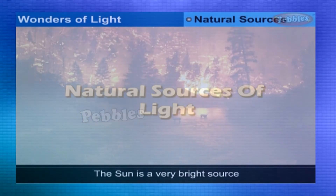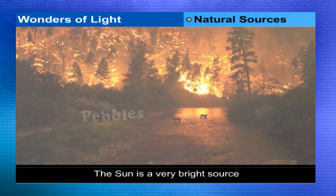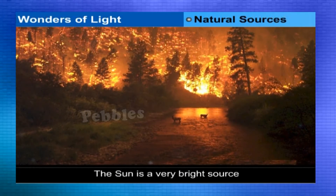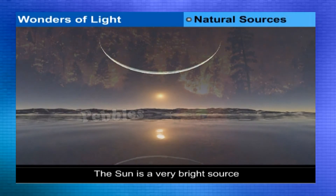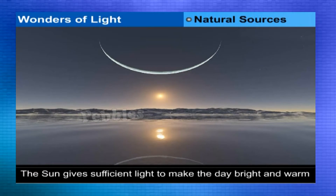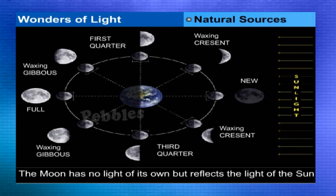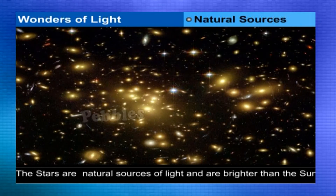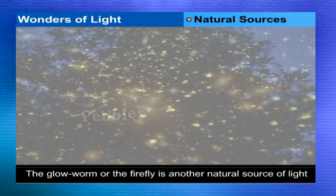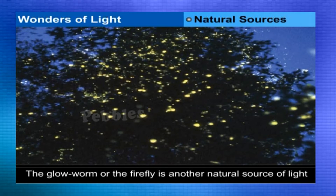Natural Sources of Light. The Sun: It is a very bright source. Even though it is 150 million kilometers away from the earth, it gives sufficient amount of light to make the day bright and warm for us. The Moon: The Moon has no light of its own but reflects the light of the sun. The Stars are natural sources of light — some of them are even brighter than the sun. The Glow Worm or Firefly is another natural source of light.